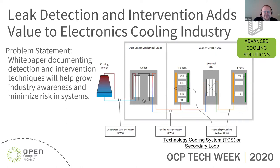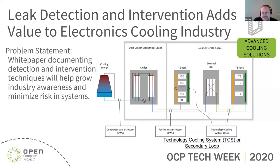As part of the introduction, we're documenting detection and intervention techniques to help grow industry awareness. We're trying to get information out there without stifling creativity. We're really focused inside the data center — specifically the technology cooling system (TCS) loop, also called the secondary loop.